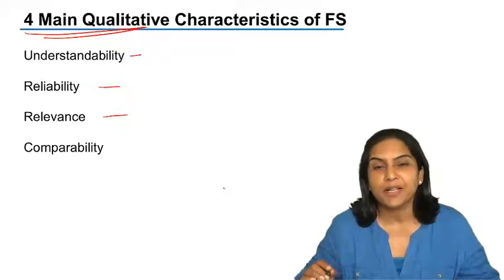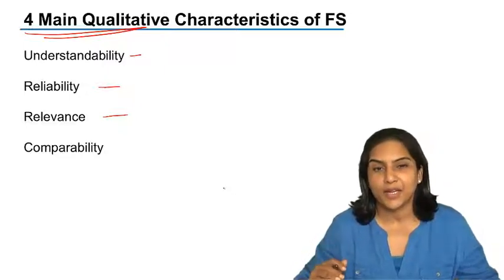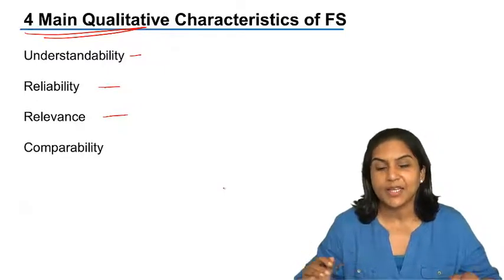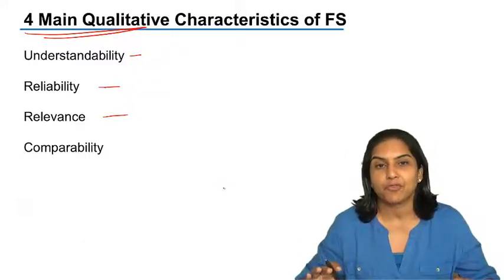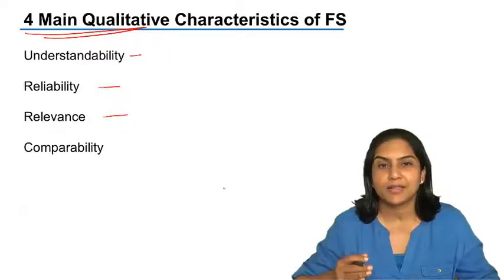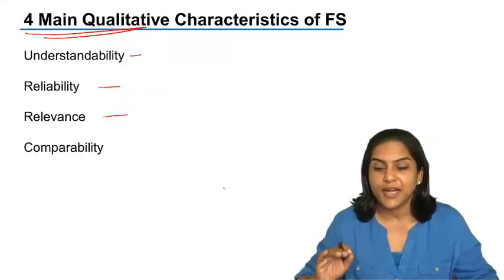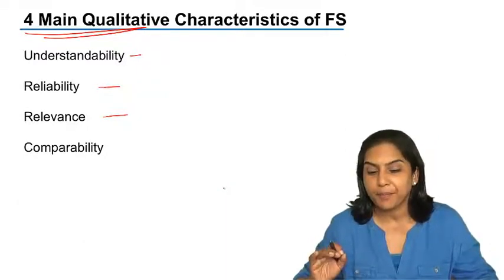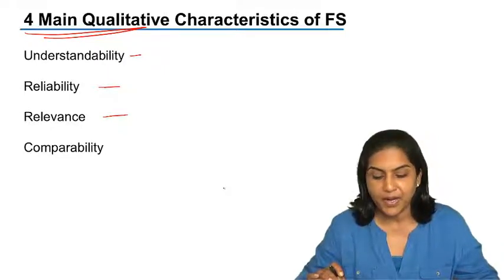if there were some abnormal events, the same is shown separately in the profit and loss statement, in the income statement, so that we know the actual profits and the reason for the change in profits due to some abnormal situation. So, one of the major qualitative characteristics of financial statements is that it should be relevant.